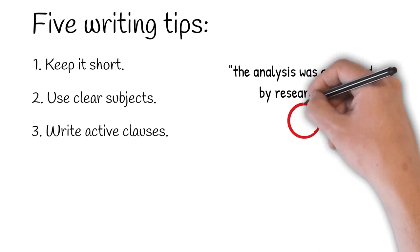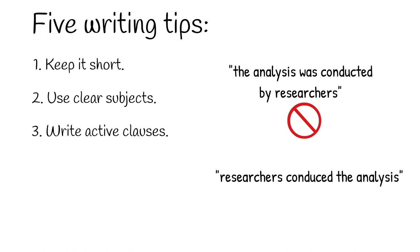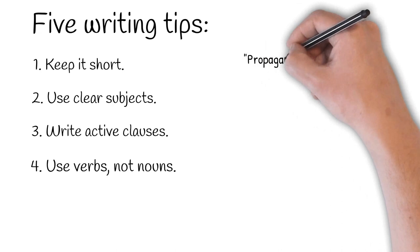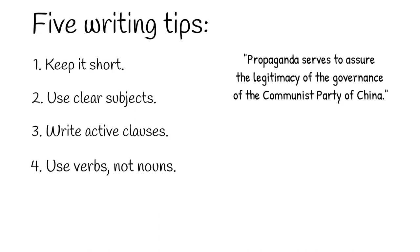This then is the fourth point. Use verbs, not nouns. You will frequently see academics chain together nouns through an endless series of prepositions like in this example. Propaganda serves to assure the legitimacy of the governance of the Communist Party of China. Let's scrap that horrible attempt at a sentence and rewrite it using active verbs like this. The Chinese Communist Party uses propaganda to legitimate how it governs. There, much better.